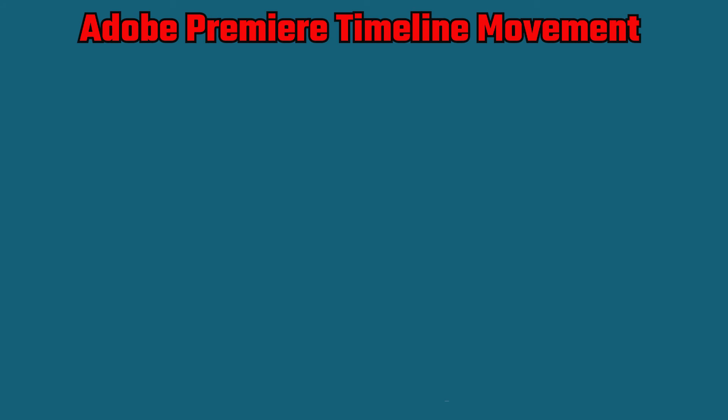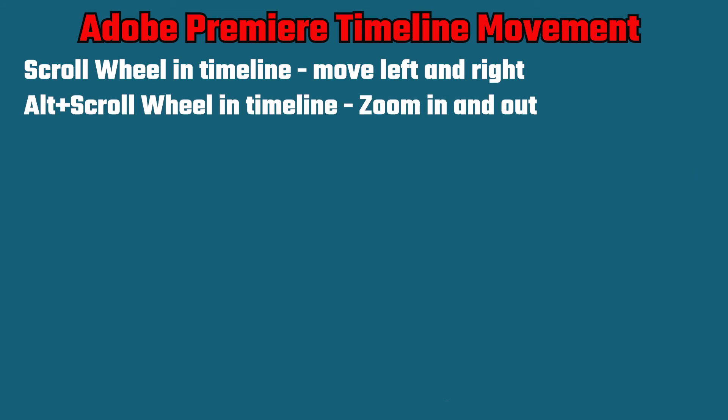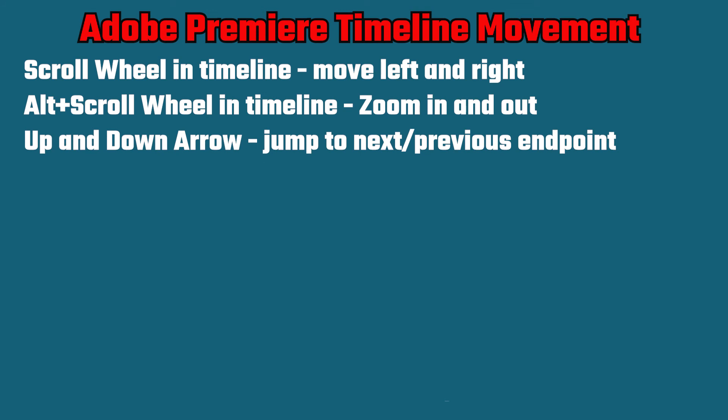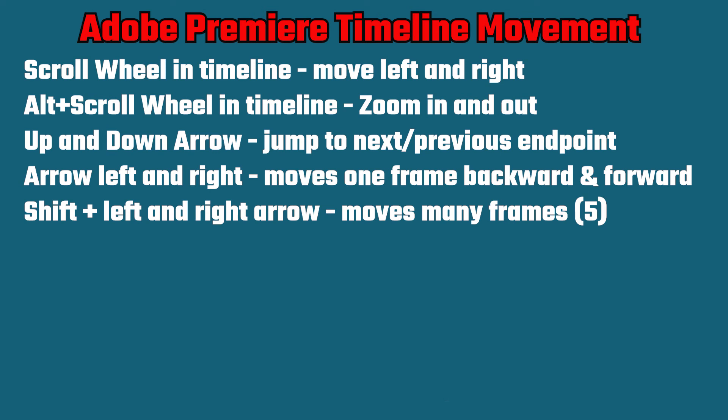In this video, I'm going to go through Adobe Premiere timeline movement keystrokes and techniques, including: scroll wheel in the timeline moves the playhead left and right; alt plus scroll wheel zooms in and out of the timeline; up and down arrow key jumps to the next and previous endpoints; arrow left and right moves one frame at a time; and shift left and right arrow moves three to five frames at a time backward and forward.